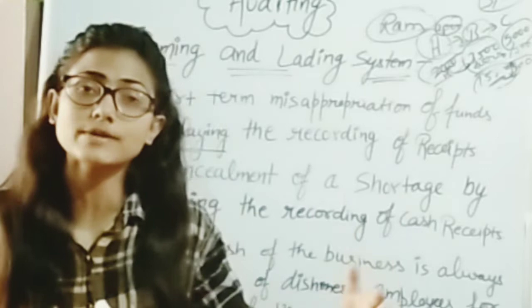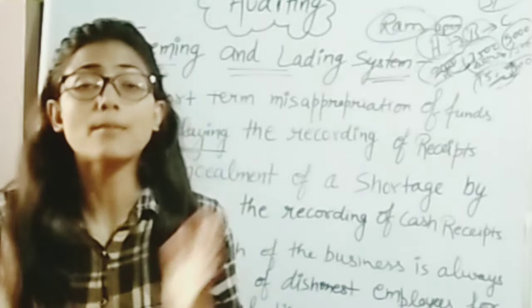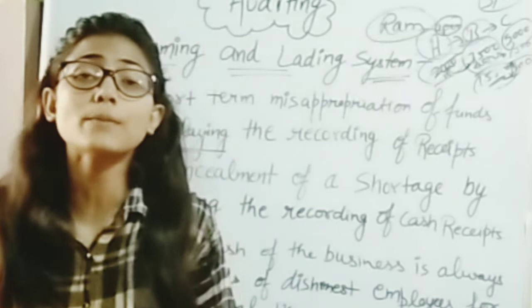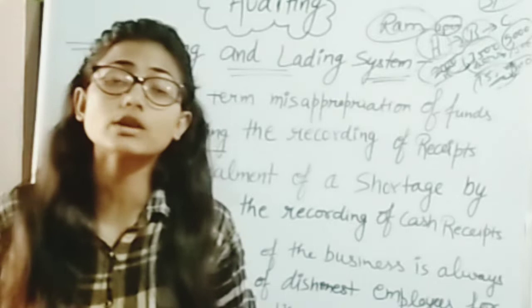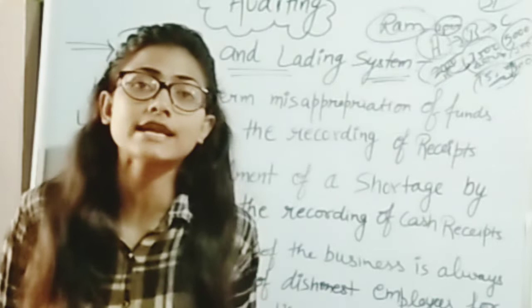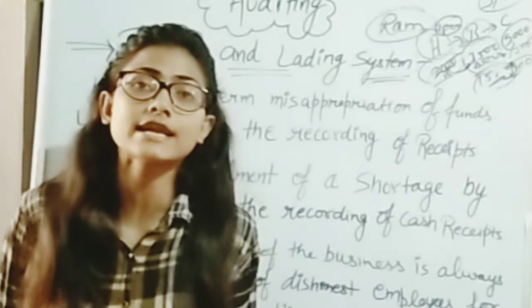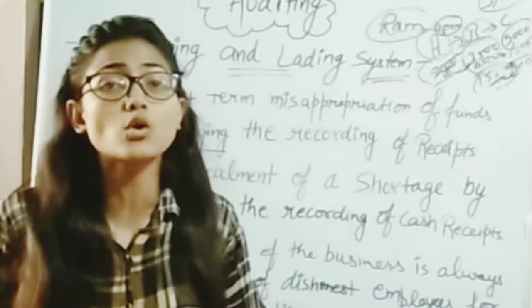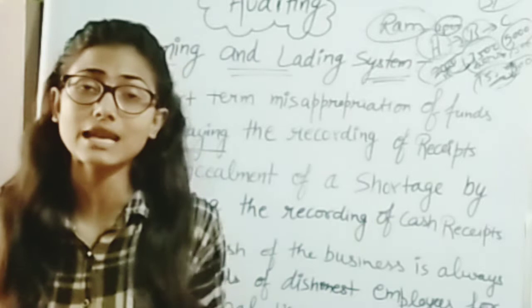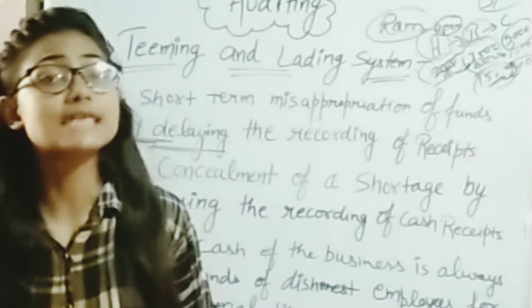The cashier is doing a report but delaying it. In the next month, he will complete the account when the next person comes to deposit. He is using the cash form, and when the auditor comes to check, the fraudster will leave the organization. He delays recording the account and eventually does not record it at all.